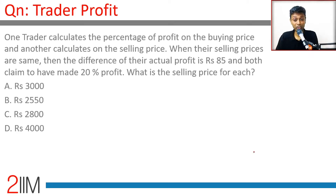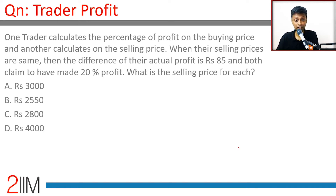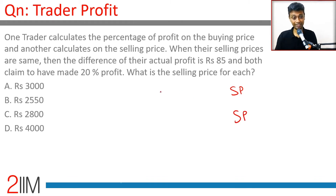One trader calculates the percentage of profit on the buying price and another calculates on the selling price. The buying price is right, the selling price calculation is wrong, but the selling prices are the same. The difference in their actual profit is 85, and both claim to have made 20% profit, so the cost prices are different.